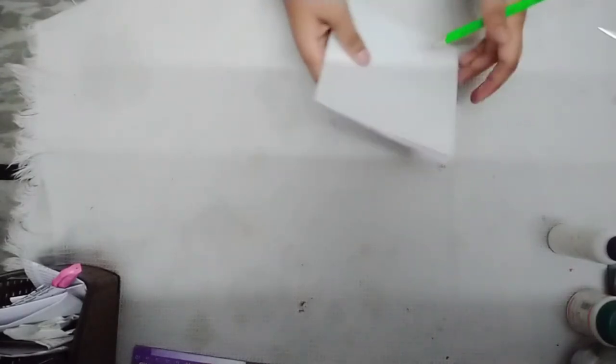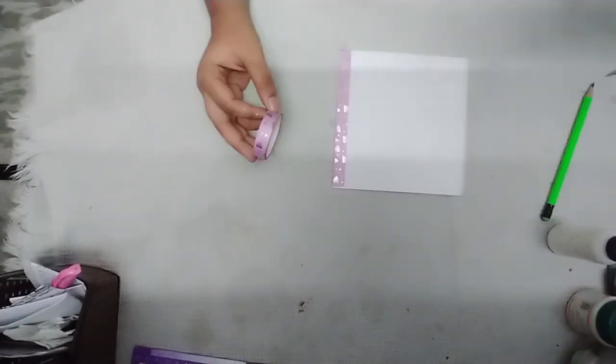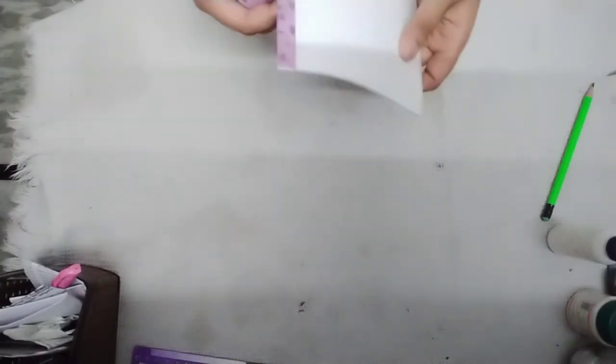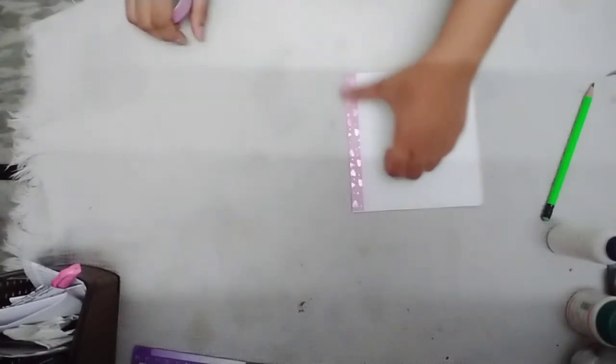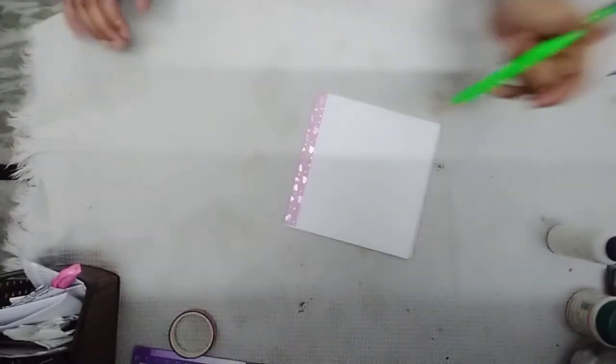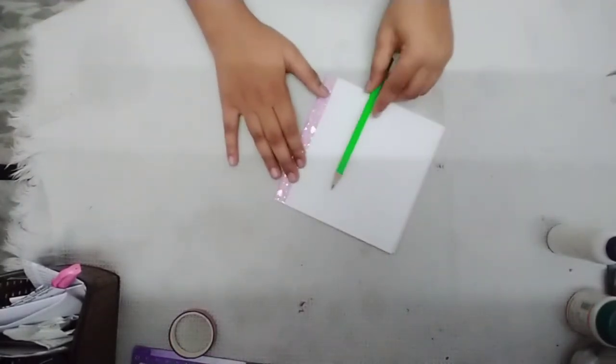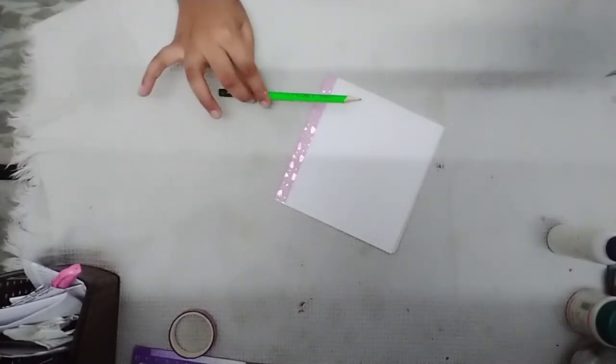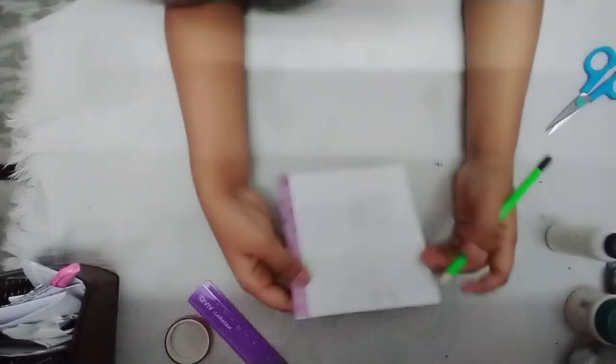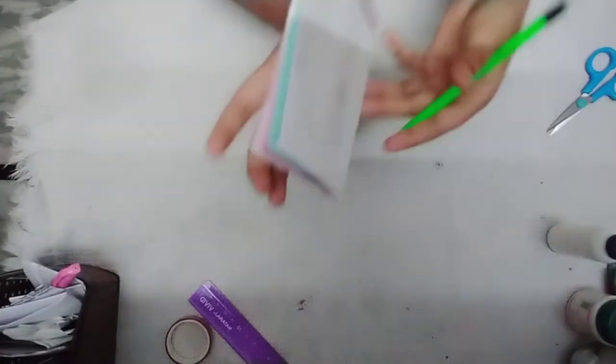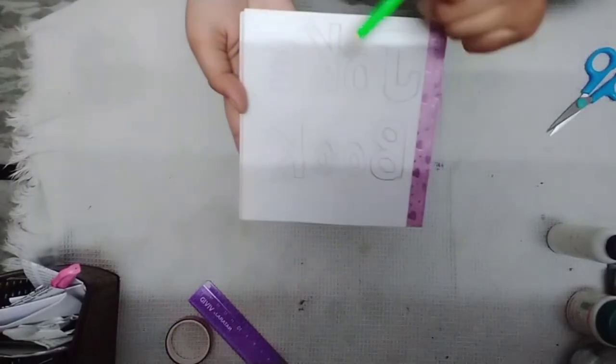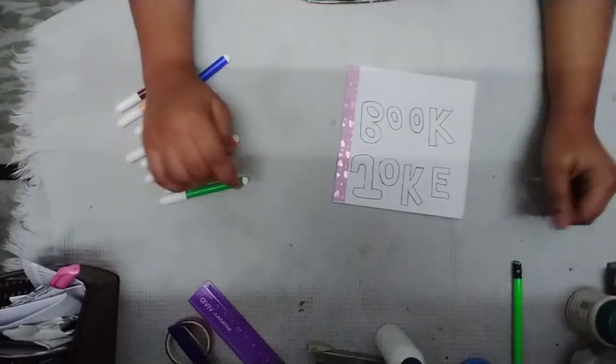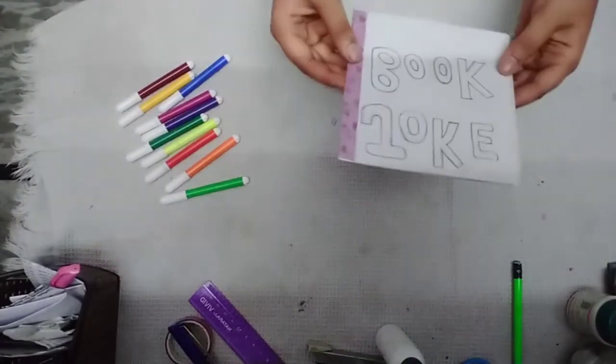So I have totally made the joke book. Now let's decorate it. I have decorated with the pink heart tape. I am going to write the joke book in bold style. In three, two, one, go. I have written 'Big Joke Book.' Now I have to color this. I have done the coloring.